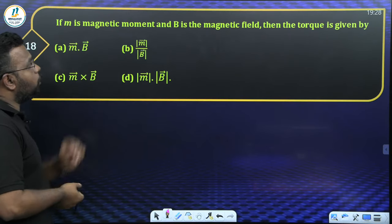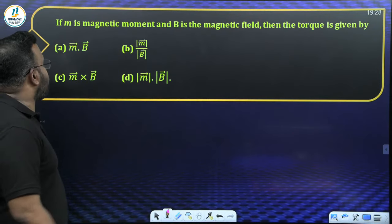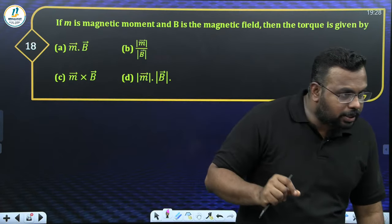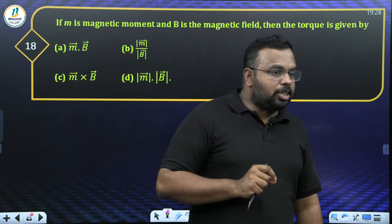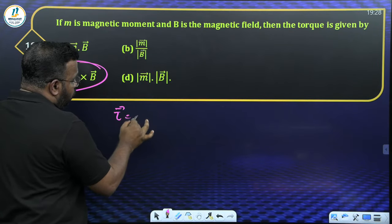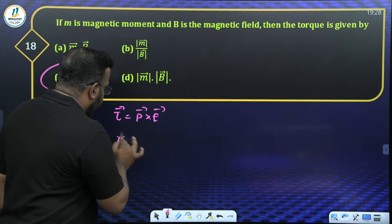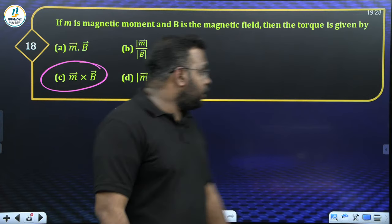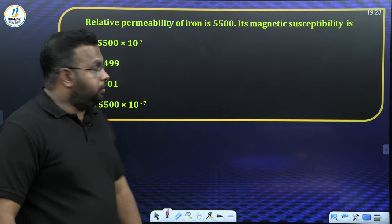Question 18: If M is the magnetic moment and B is the magnetic field, then torque is — ? In electrostatics the formula is τ = p × E. In magnetism the analogous formula is τ = M × B (cross product). Answer: option C.